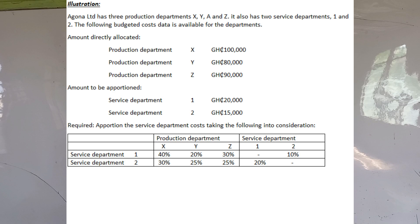Aguna Limited has three production departments X, Y, and Z, and it also has two service departments, one and two. The following budgeted cost data is available. Amounts directly allocated: production department X is 100,000 Ghana cedis, Y is 80,000, and Z is 90,000.